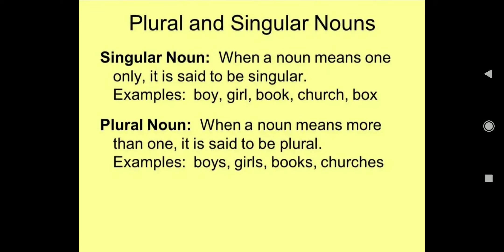Now, plural and singular noun mein aap kaise identify karenge in dono ko. Jab hum singular noun ki baat karte hain — it is a noun that means one only. Jis ek ki baat karte honge, it is said to be singular. For example: boy means one boy, girl means one girl, book means one book, church means one church. Jab ek ki baat ho rahi hogi, then singular noun kahlaayega. When a plural noun means more than one — jahan par more than one ki baat ho rahi hogi — it is said to be plural. For example: boys, girls, books, churches, boxes — yeh sabhi plural noun hain.